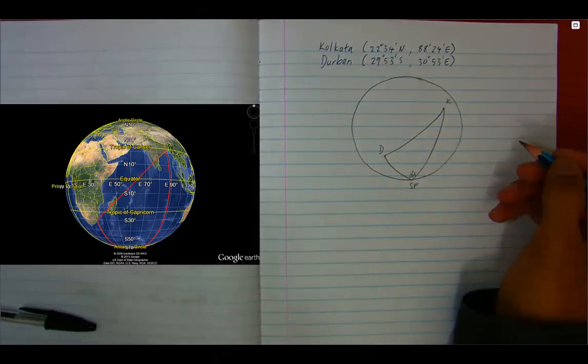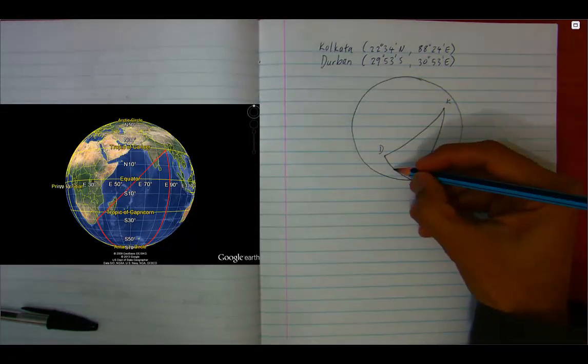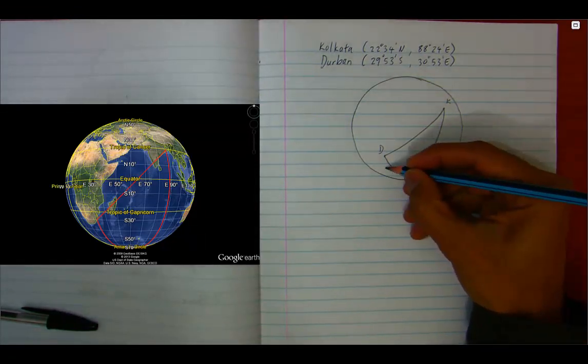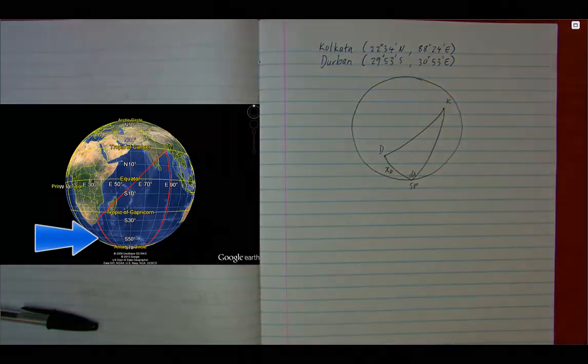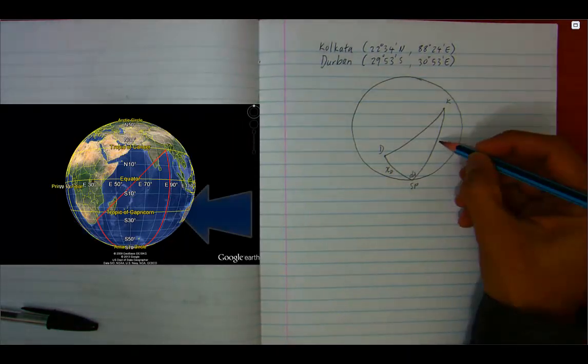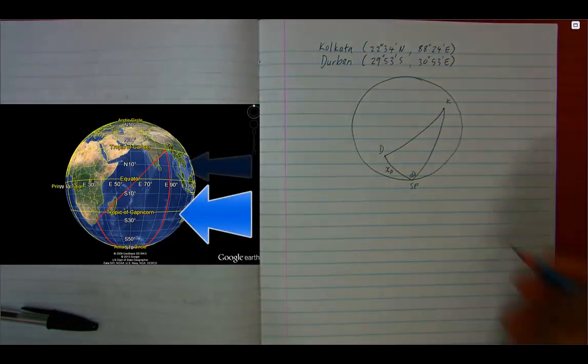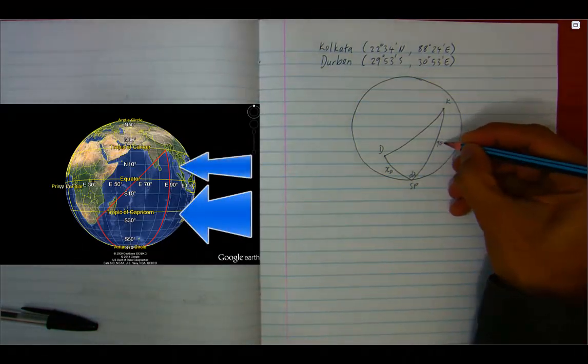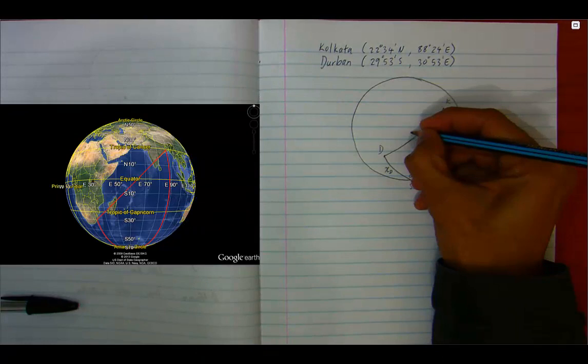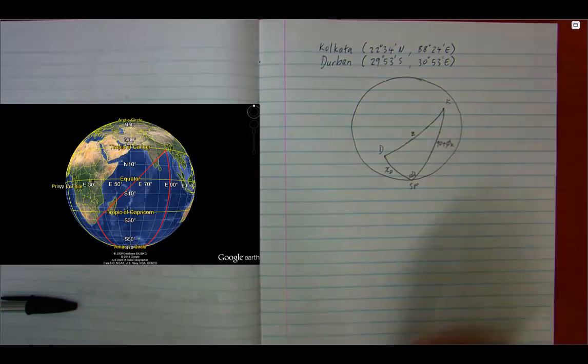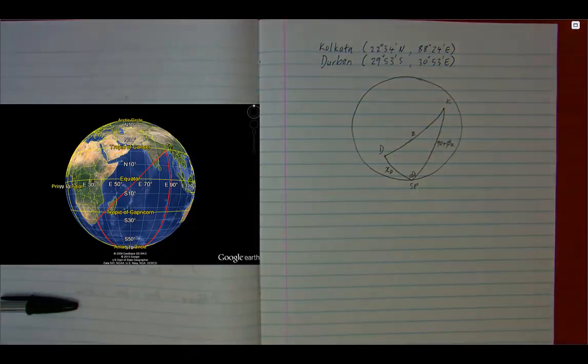this angle will be d-lambda. This side will be the co-latitude of Durban, chi d. And this side will be 90 degrees plus the latitude of Kolkata, 90 plus phi k. I will call this side z, which is the angular distance from Durban to Kolkata along the great circle path.